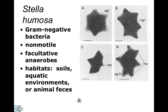Stella is a specific example of a bacterium that has a star shape — an alternative to either a coccus or a bacillus. This organism is found in soil and aquatic environments and is a typical kind of soil organism. We could even find it in animal feces. It's one of nature's recyclers.